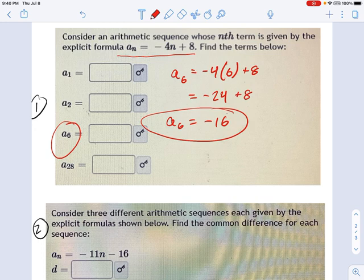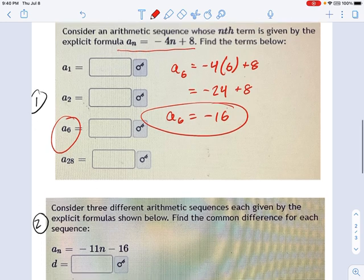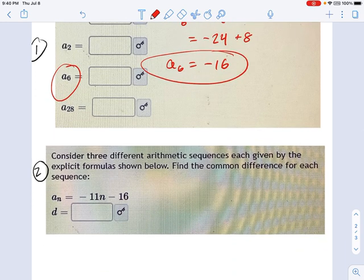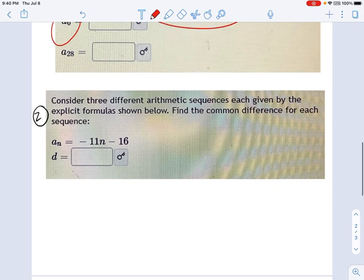That's how you use the explicit formula directly - you just plug numbers in. Now this next example says, consider three arithmetic sequences, each given by the explicit formulas. Find the common difference for each sequence.